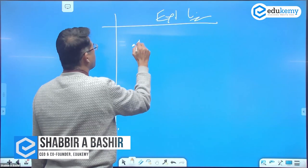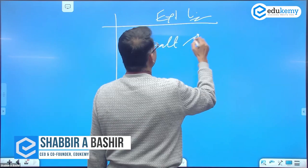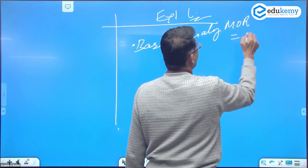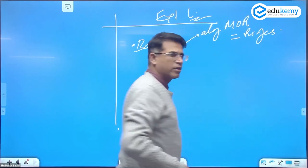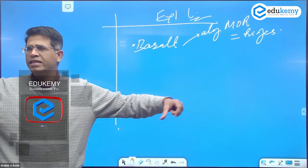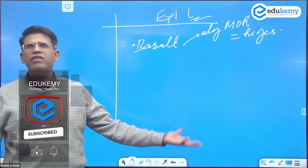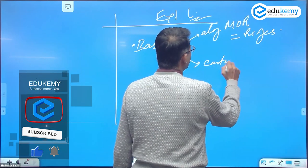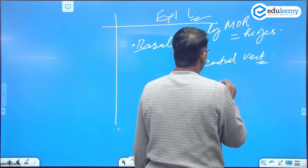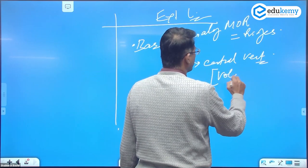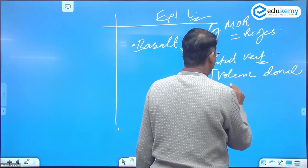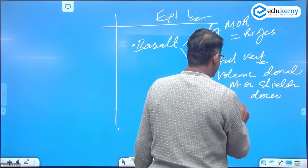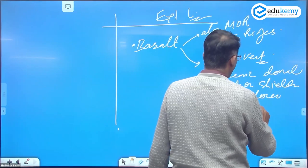Exclusive landforms. So the basalt wale hote hain, they can be along the moors, so they form ridges along the moors. They form the ridge. Moor itself is the ridge. Basaltic can be central vent type. What will these form? They'll form volcanic domal mountains or volcanic shield domes.